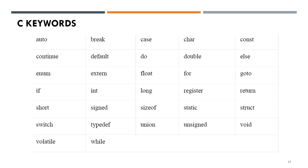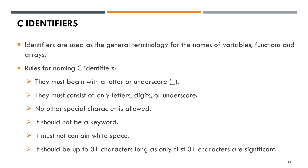These are the C keywords. Next, C identifiers. Identifiers are used as the general terminology for the names of variables, functions, and arrays. Rules for naming C identifiers: they must begin with a letter or underscore; they must consist of only letters, digits, or underscore; no other special character is allowed; it should not be a keyword; it must not contain white space; and it should be up to 31 characters long, as only the first 31 characters are significant.